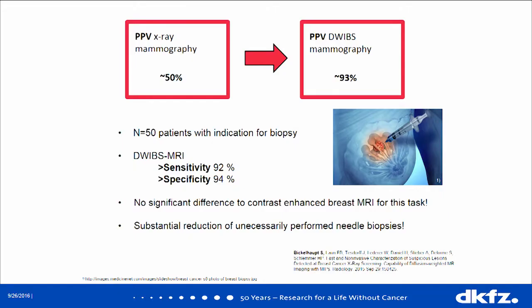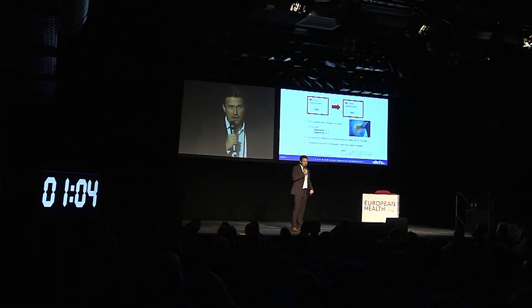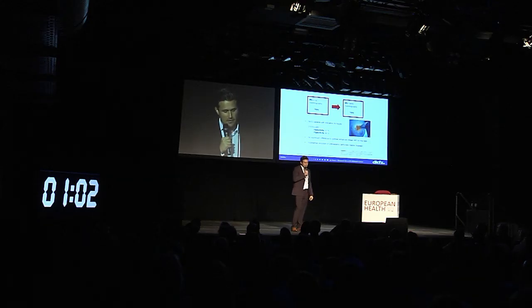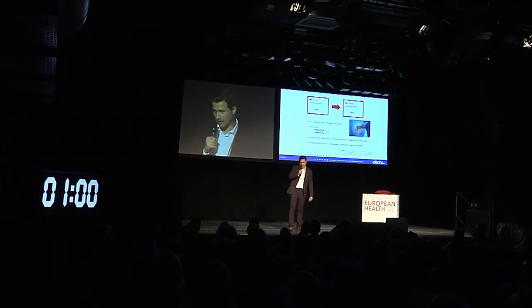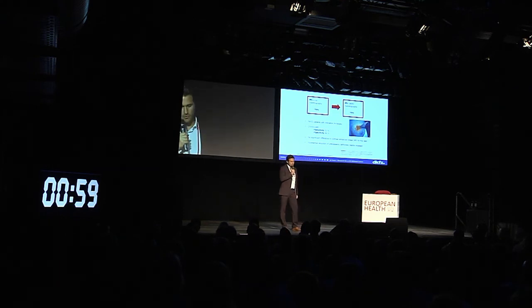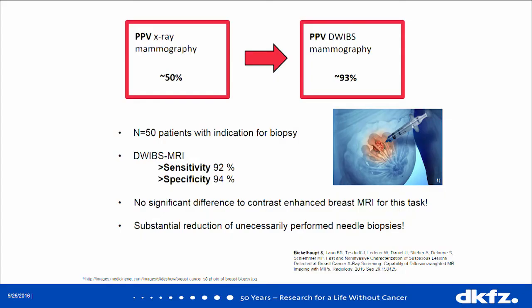By doing so, we could raise the positive predictive value from only 50%, which is pretty poor, to about 93%. Still, we are pushing hard to bridge the gap to 100%. On the last two slides, I want to show you what we are doing now to further characterize breast cancer lesions.